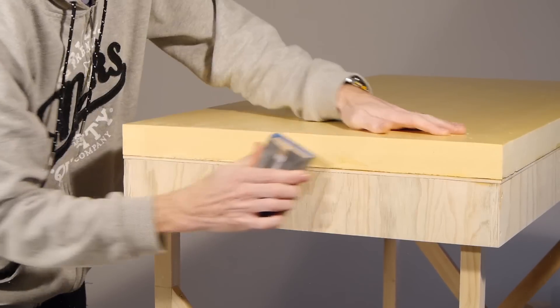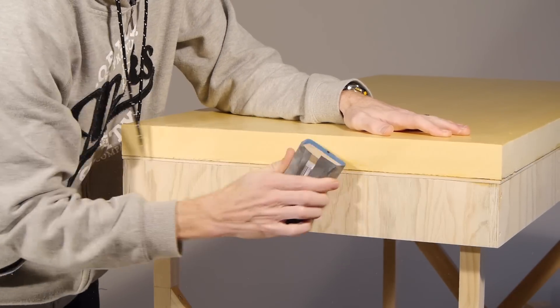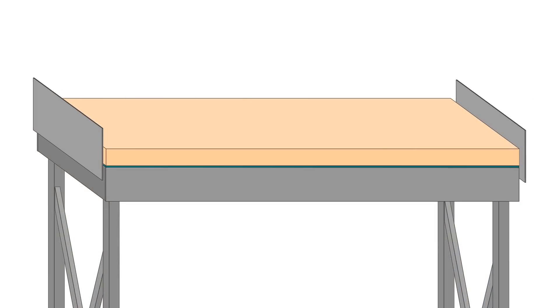The area of the module most likely to sustain damage is going to be the ends where one module connects to the other. To help avoid damage I'm going to reinforce the ends with a sheet of plywood.